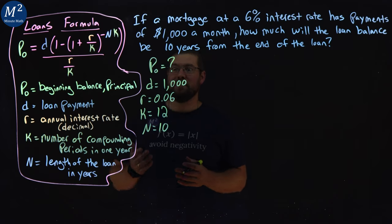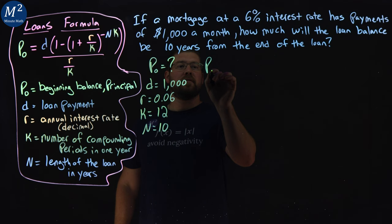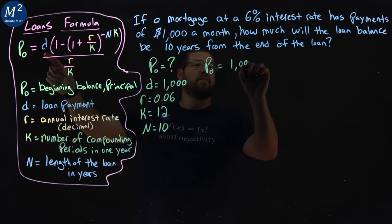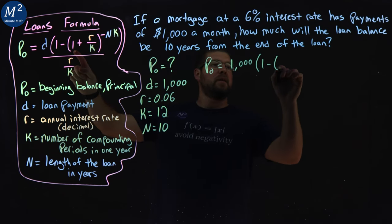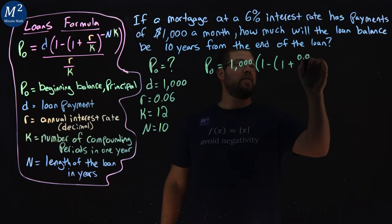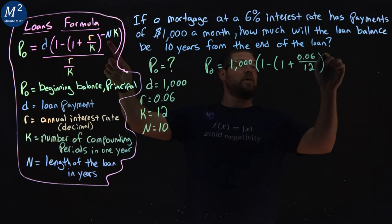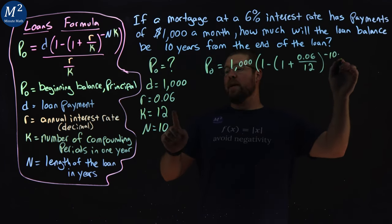We're now going to plug these values into our loans formula. So we don't know what our P sub 0 is, but we have a D value of 1,000 times 1 minus 1 plus an r, which is 0.06 over a K value, which is 12, to the power of a negative N value, which is 10, times a K value, which is 12...